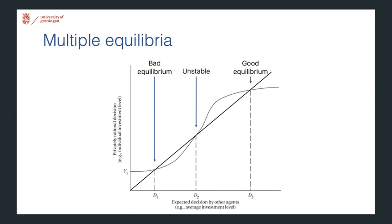Now in this setup, there are two equilibria or two stable equilibria. You can see that this point over here is unstable because if you're ever so slightly below here, then the privately rational decisions are less than the expected decisions by others. So you walk down the reaction curve until you hit this equilibrium.